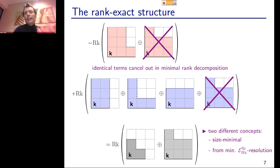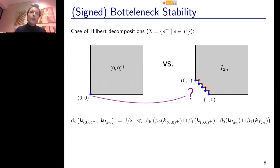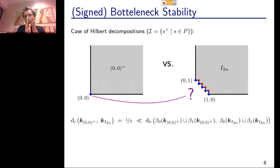I'm going to use this idea for the Hilbert function decompositions. The decompositions are given by Hilbert functions of free modules — one from the minimal free resolution using the alternating sum formula, giving the multigraded Betti numbers. The signed bottleneck distance between multigraded Betti numbers is defined as the usual bottleneck distance between the positive part (even degree) of the first module's Betti numbers plus the odd part of the second module's Betti numbers, and vice versa.